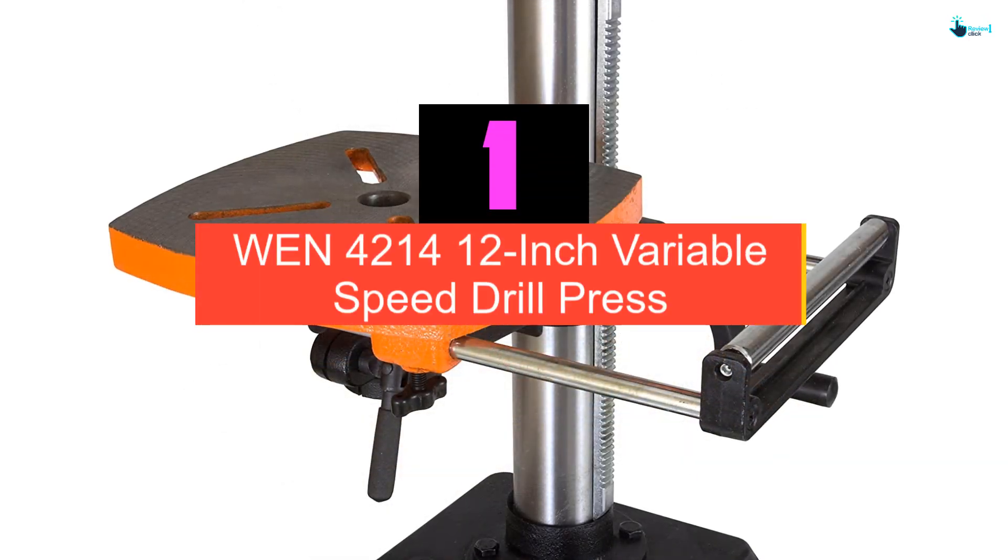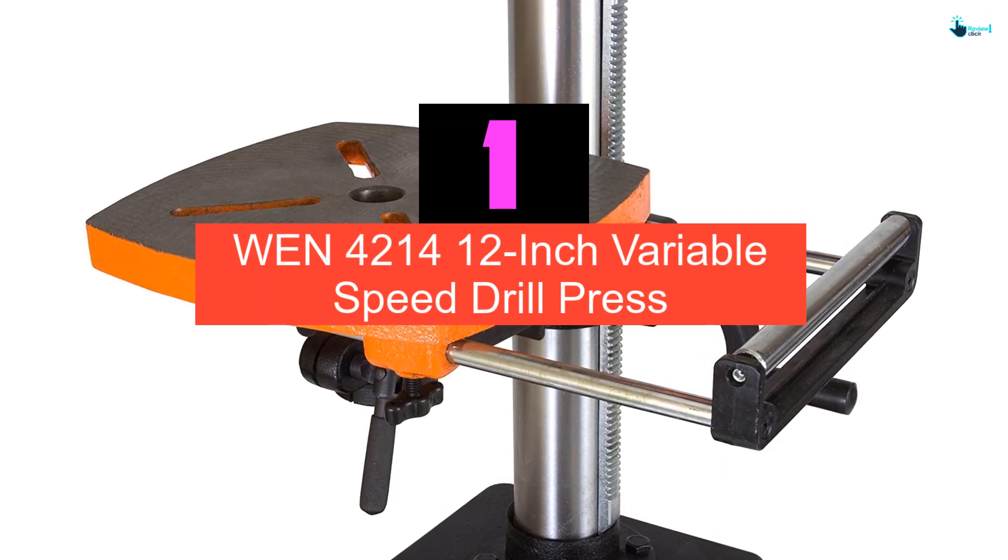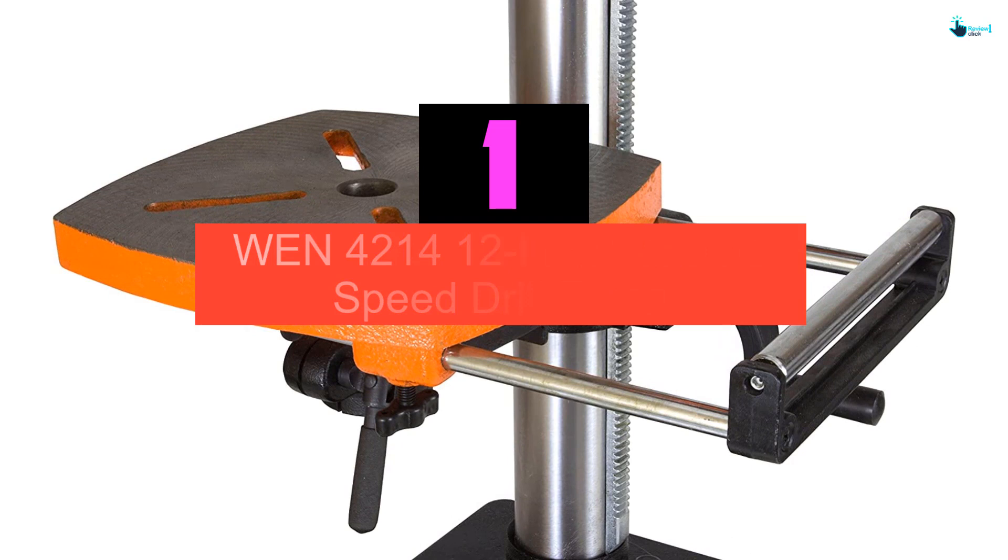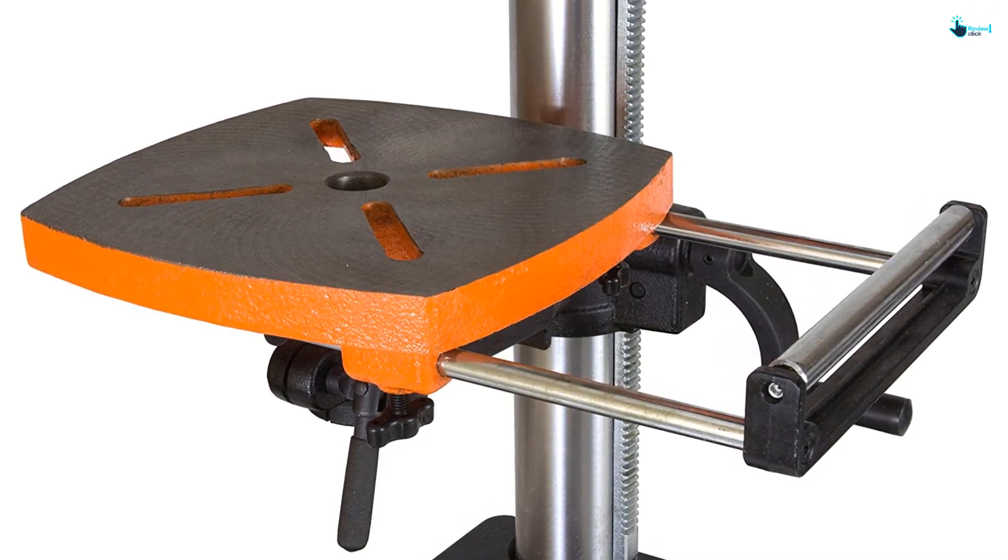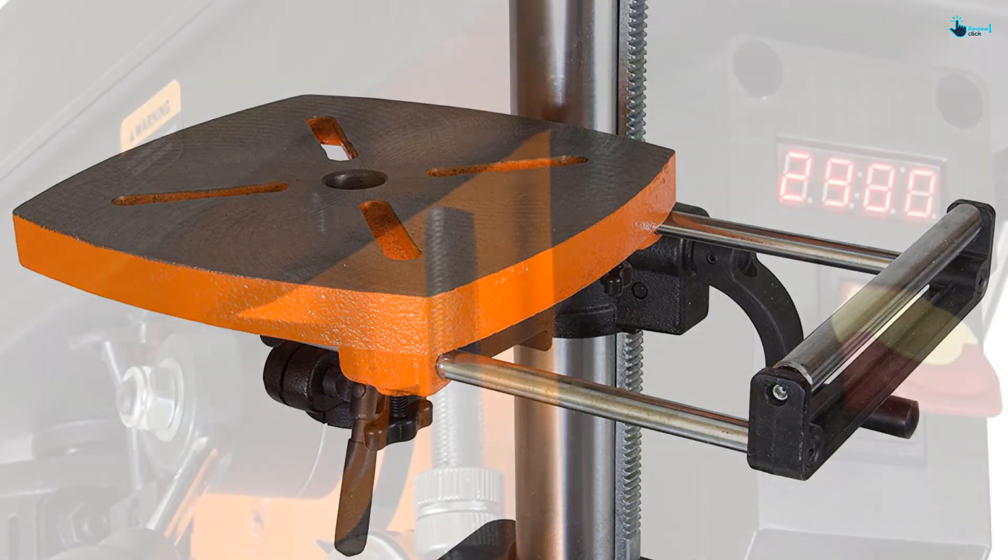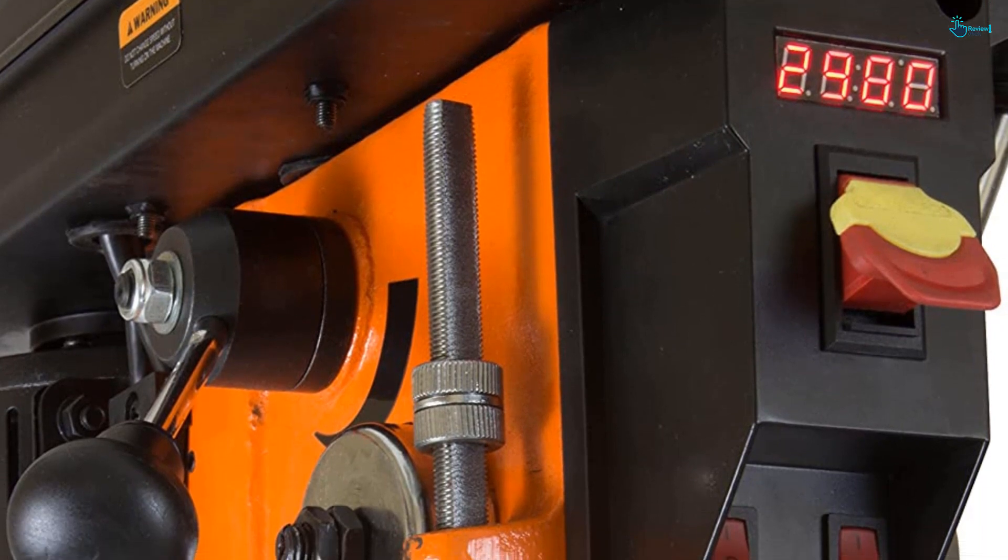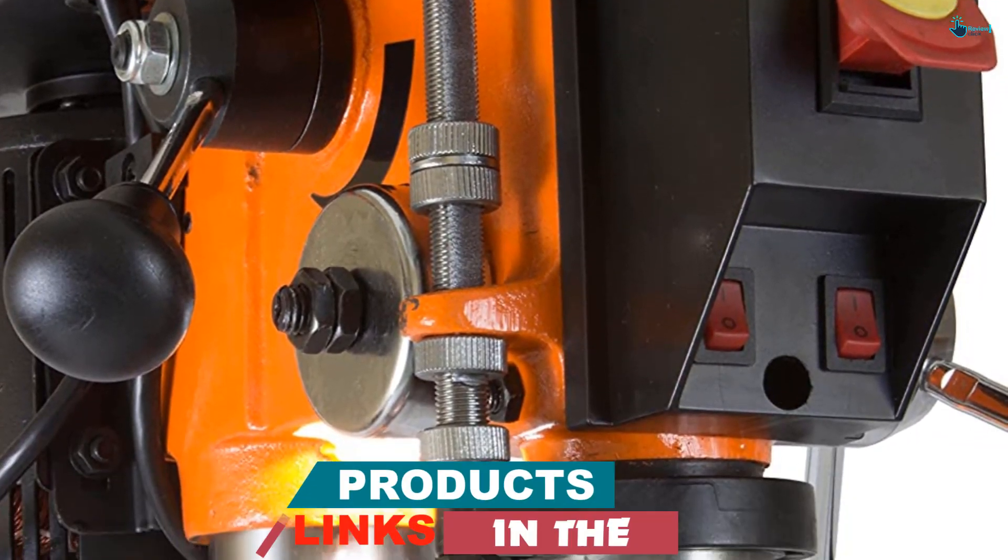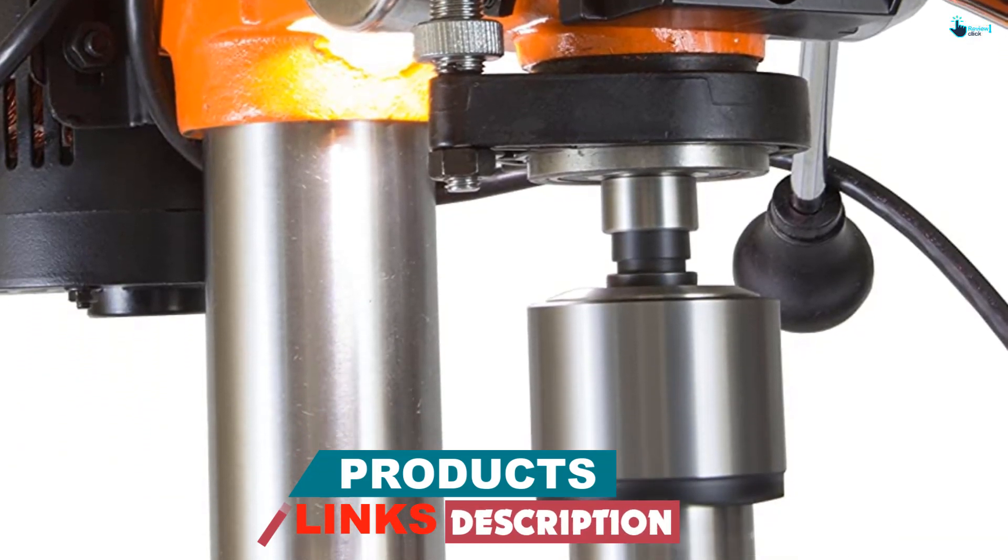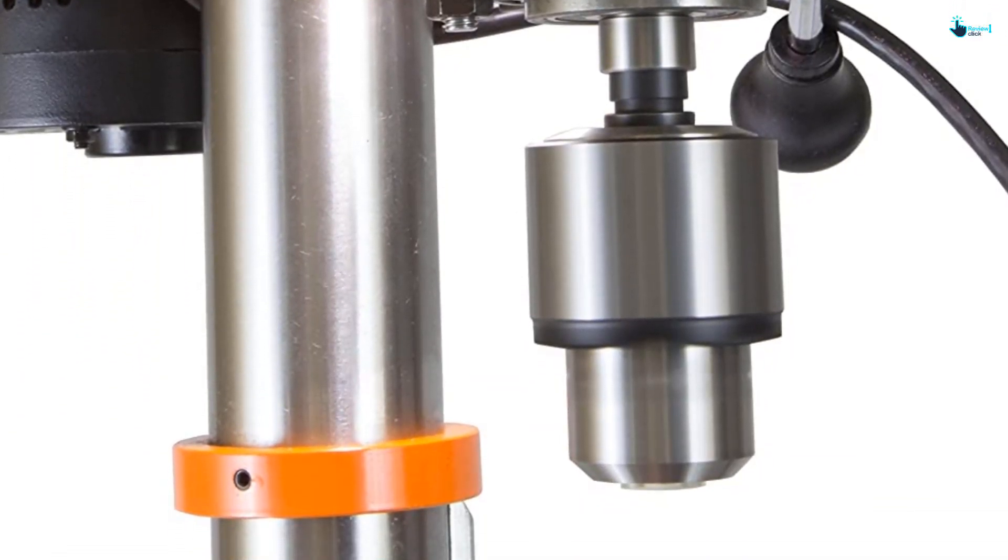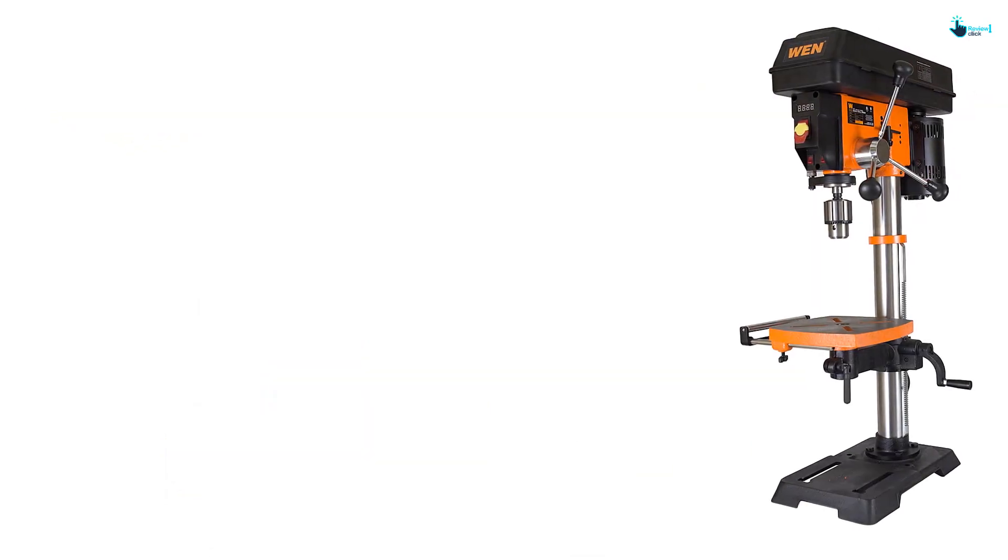And finally at number 1, we have the WEN 4214 12-inch Variable Speed Drill Press. WEN 4214 is also one of the best floor drill presses out there in the current market. The accessory is an ideal choice for learners as well as professionals. It's not extremely bulky and not very heavy, so installing and utilizing it is not difficult. We enjoy the good design that makes installation and using it really convenient.